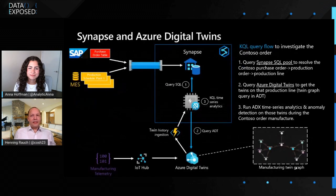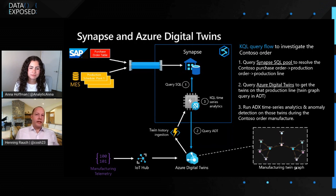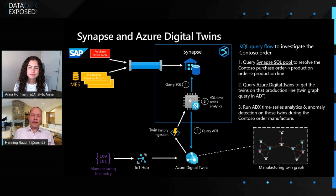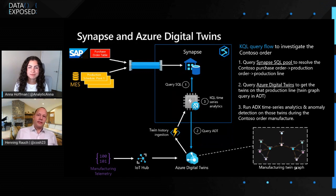What you see on this slide is two things: first, the data integration flow using Synapse pipelines for the production order and schedule data, and second, the data integration of the telemetry data from the production line via IoT Hub, Azure Digital Twins, and into Azure Data Explorer. Now that we know how the data gets ingested, we can look at how a single KQL query is used to combine data from SQL, Azure Digital Twins, and time series data in Synapse Data Explorer.